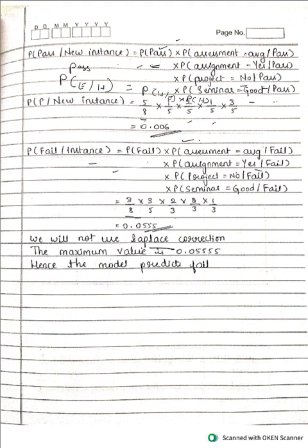That's all about this problem. You have to carefully look at the sample dataset and find the probability of fail or pass for each attribute according to what is given, then apply the calculation accordingly. Please don't forget to subscribe, like, and share. If you have exams coming up, please comment so I can make more videos. Thank you.